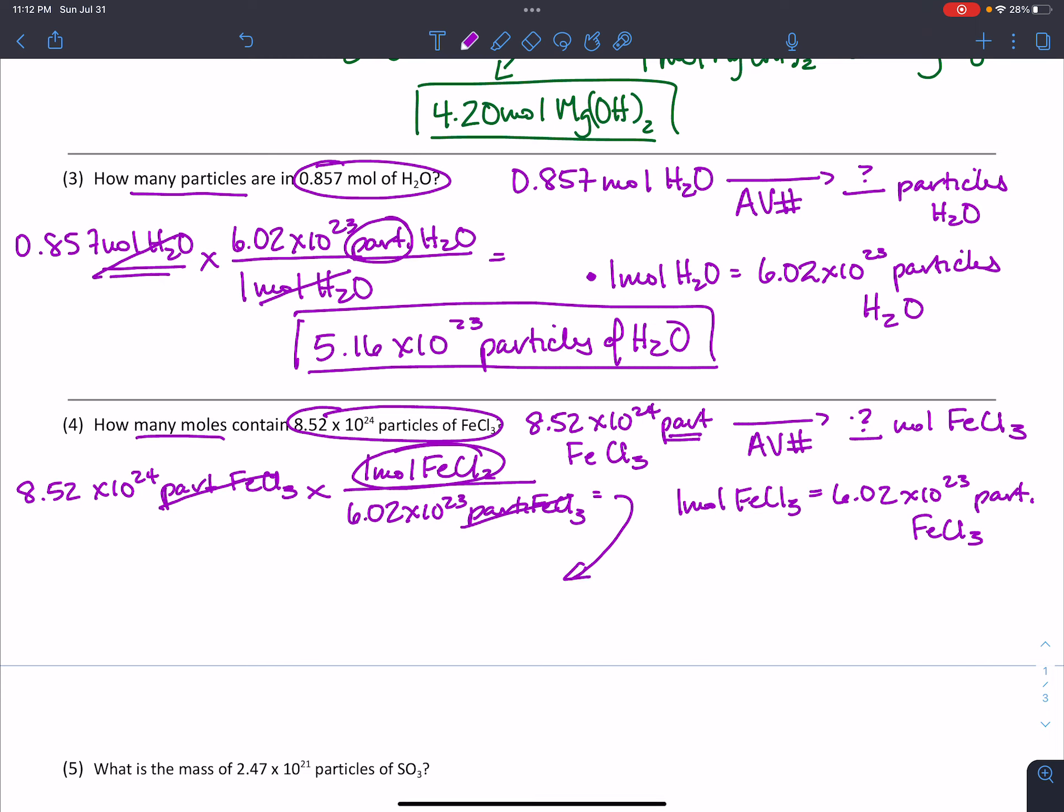So we type in 8.52 times 10 to the 24th divided by 6.02 times 10 to the 23rd and you should get 14.15 moles of FeCl3. Again, similar to problem number three, if you did not get that answer, please make sure you check in with me so that I can make sure your calculator is not the one causing the problem.